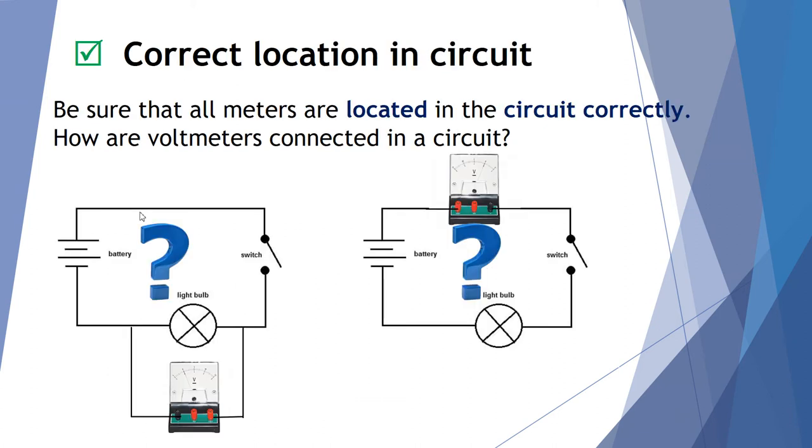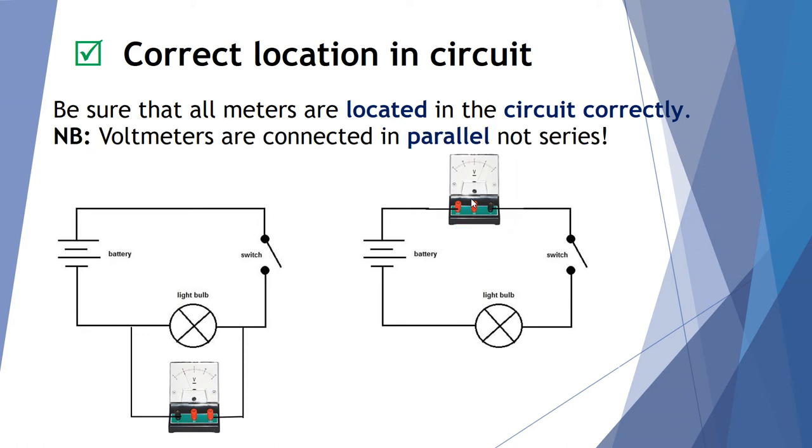So first of all let's look at the correct location in circuit. We have a voltmeter here on this first circuit on the left and a voltmeter here on the second circuit on the right. Which one of those is correctly positioned or located in the circuit? Voltmeters are always connected in parallel, not in series. Here's our voltmeter in parallel. So that's correct. The one on the right is incorrect.